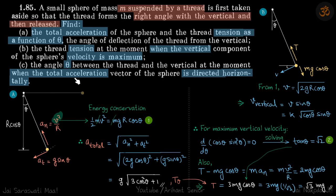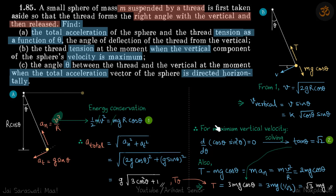Now for the third part — the angle when the total acceleration vector is directed horizontally. When the total acceleration is horizontal, that means the vertical acceleration is zero. As the particle swings, the vertical acceleration starts at a maximum downward, decreases to zero, and at that zero-crossing the vertical velocity reaches its maximum. This is the same angle we found in part two: tanθ = √2.